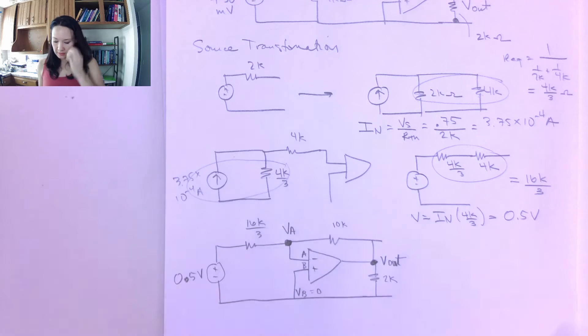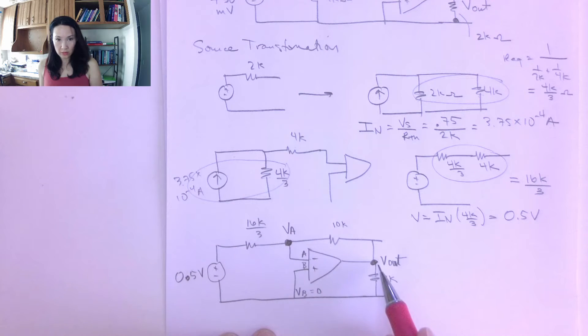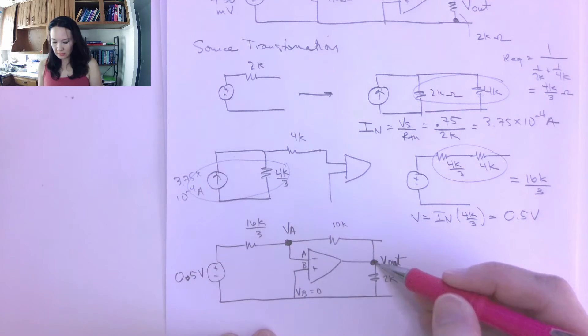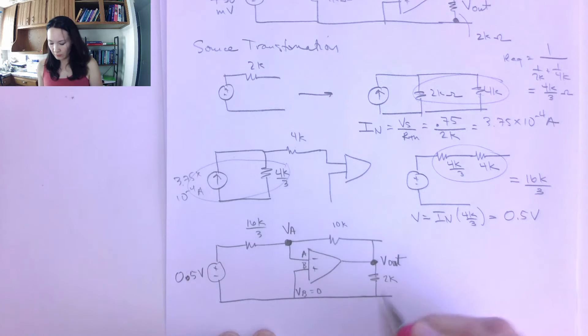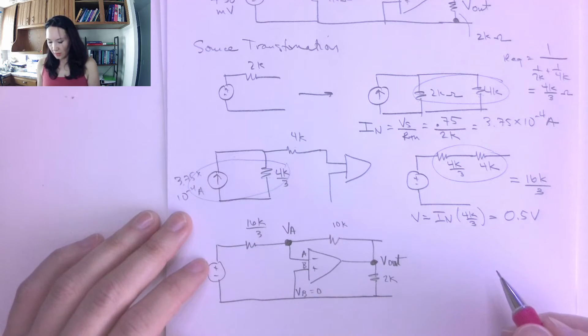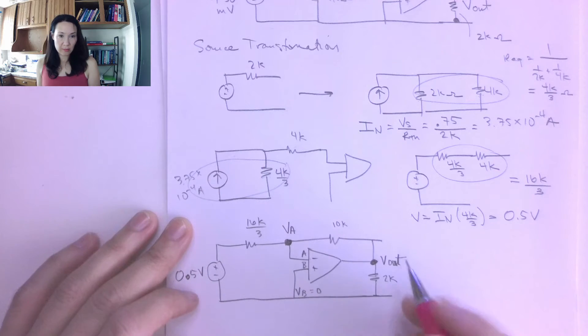So Vout is the voltage coming out of this op amp here, and it's going from this location to ground. So Vout is actually the voltage across this 2k ohm resistor. So that'll be useful, because later if I'm asked for the output current, I could easily calculate that using Ohm's Law as well. Okay, great. So I have my nodes labeled.